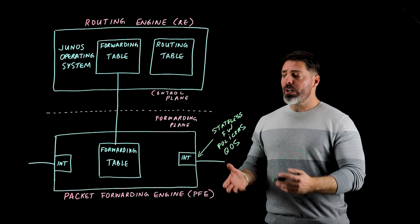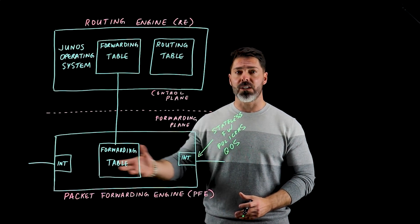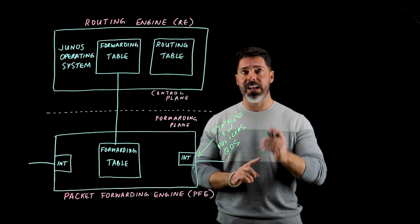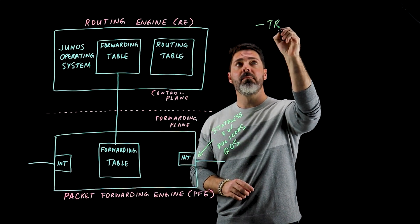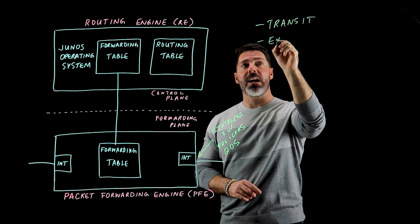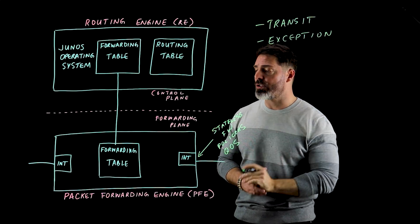Moving on, we should talk about the two different types of traffic that you're going to see traversing through a Juniper platform. You have what's known as transit traffic and what's known as exception traffic. Let's take a look at the first, which is transit traffic.